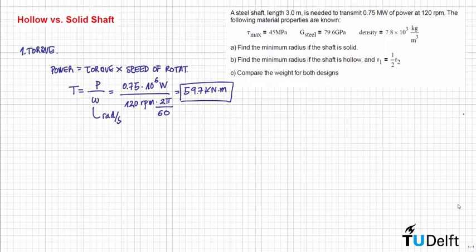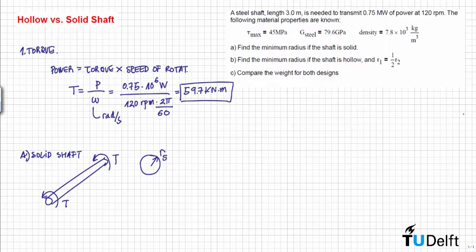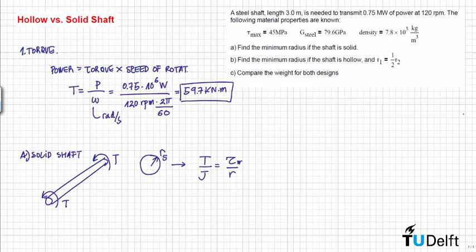Now we have all the information that we need in order to calculate what is the radius of the solid shaft. For question A, the solid shaft: we have the free body diagram where we apply a torque to the shaft and the section is solid. We need to calculate the radius of the shaft, which will be governed by the maximum shear stress. We use the torsion formula which says that torque divided by the polar moment of inertia is equal to the stress divided by R, where we use the maximum stress at the maximum radius.